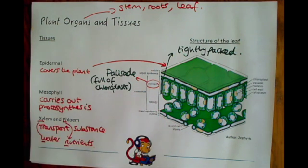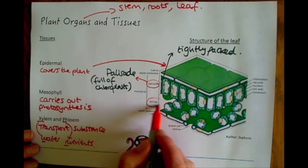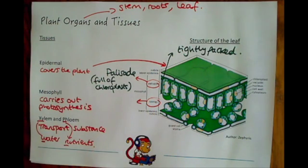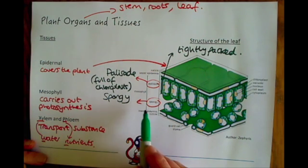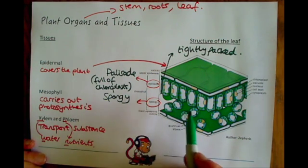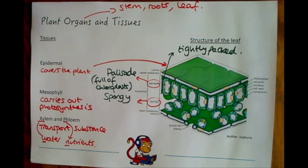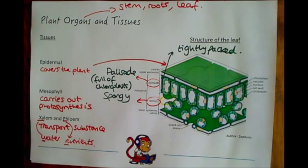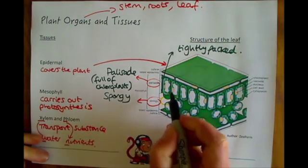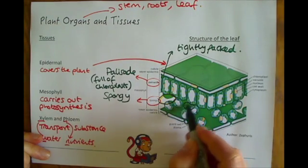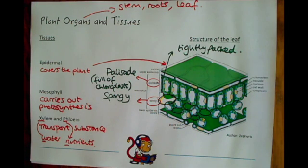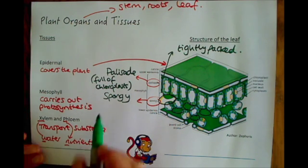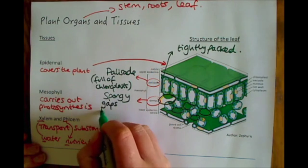The second half of the mesophyll layer is something called the spongy mesophyll. Here the cells are arranged a little differently — they've still got chloroplasts in them, but as you can see there are quite large gaps between the cells. You can see loads of gaps in the mesophyll layer.